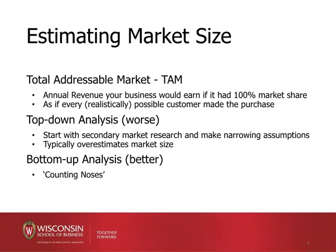is the annual revenue that your business would earn if you were able to get 100% market share — that is, if every realistically possible customer actually made the purchase. There are two different ways to calculate TAM. The first is called top-down analysis. This is generally not such a great way to do it. The way you would do this is you would find some kind of market estimate and then make certain narrowing assumptions